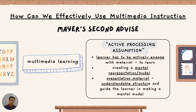The second assumption is what we call the active processing assumption, in which the learner has to be actively engaged for them to really learn. It creates a mental representation or model. Using presentation materials, it's really easy to make them understandable in a structure that guides the learner in making a mental model. As teachers, it's really important to enhance our teaching skills through these two assumptions and provide a satisfying lecture experience to our students.